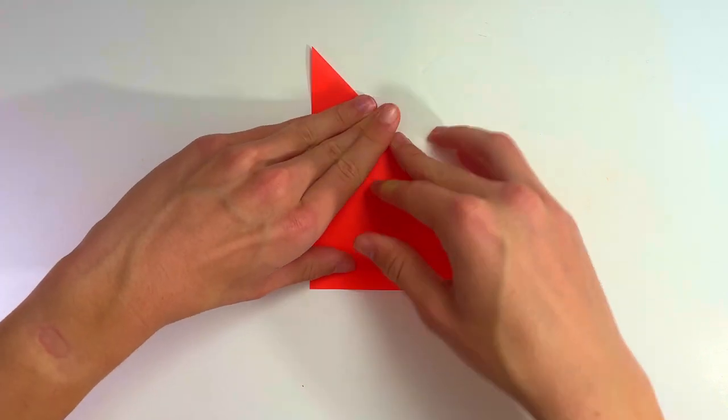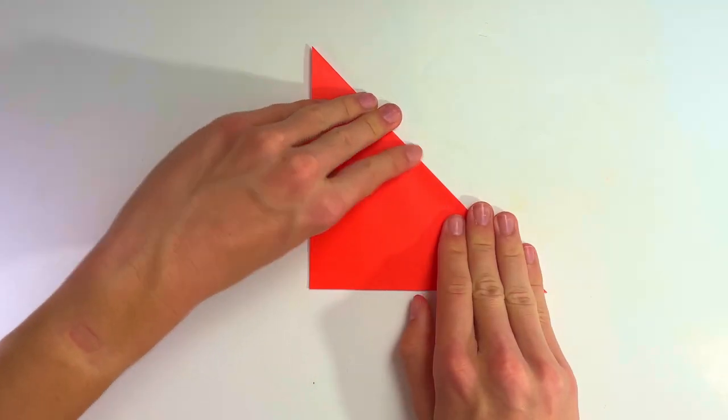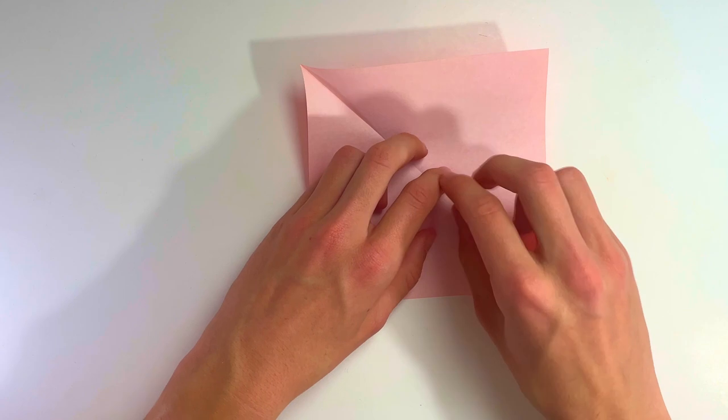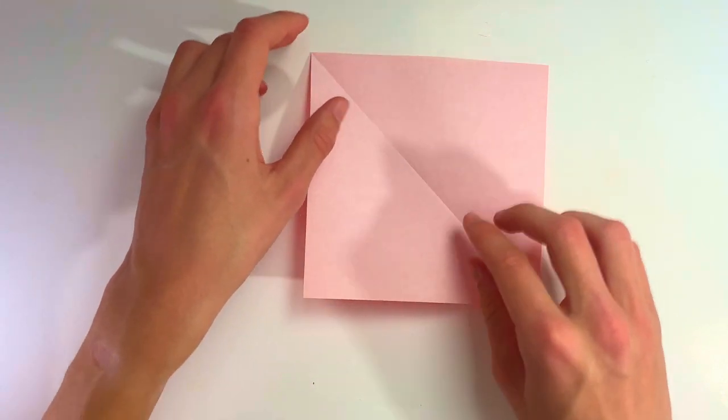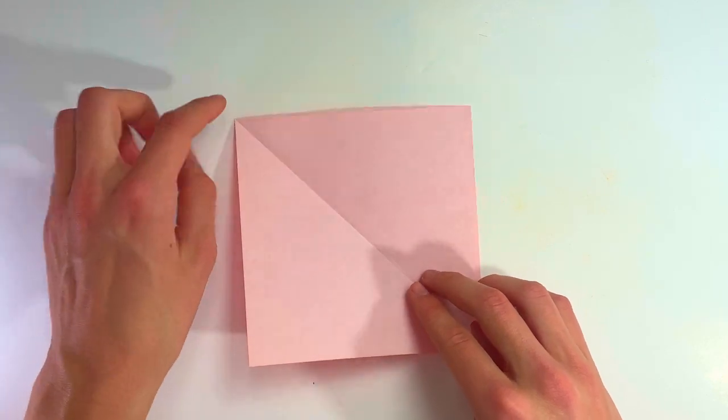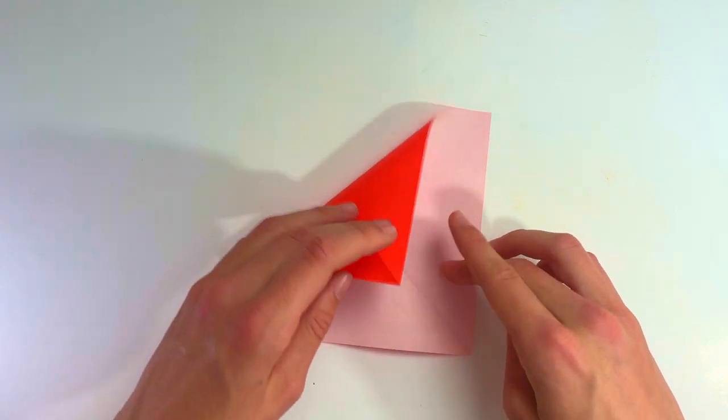Now unfold, and we're going to do the same fold but in the other direction. Take this point and fold it down in the diagonal.